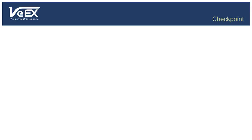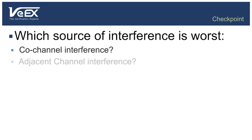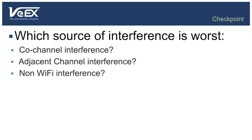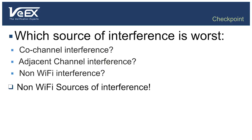Time for a quiz: which source of interference is the worst — co-channel interference, adjacent channel interference, or non-Wi-Fi interference? Well, of course, all sources of interference are bad, but non-Wi-Fi sources don't obey the 802.11 rules, making them hard to track down unless you have a dedicated spectrum analyzer to detect them. This makes them the worst of the three kinds of interference.